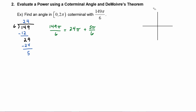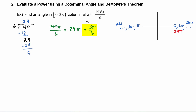Looking at our coordinate plane, we know that zero is here, pi is over here, two pi is here, three pi is here, and so on. All the even multiples of pi are coterminal with zero on the positive x-axis, and all the odd multiples of pi land on the negative x-axis. So twenty-four pi, being even, is coterminal with zero.